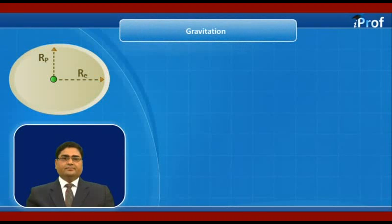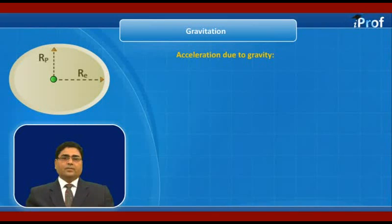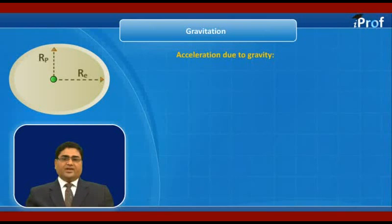We are going to study acceleration due to gravity and variation in acceleration due to gravity due to shape of earth, rotation of earth, with height from earth, and with depth from earth. Let us study variation in g one by one.